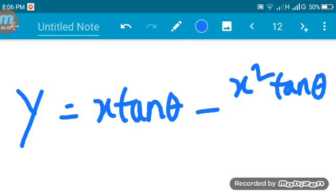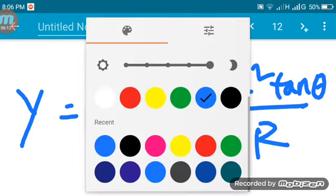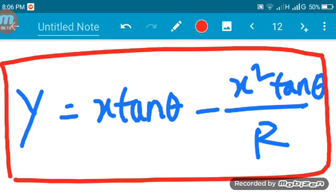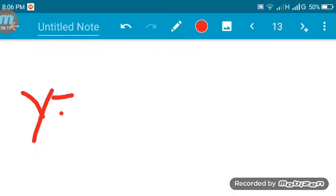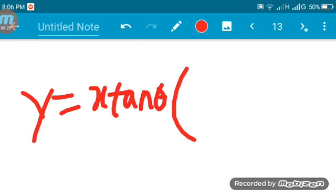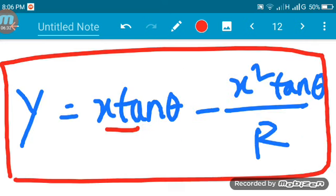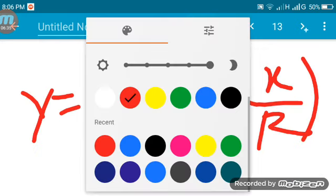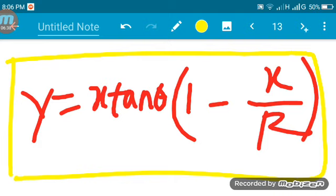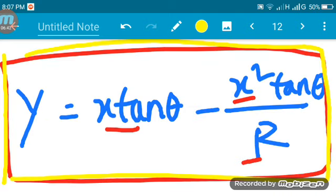So the final simplified form of the projectile motion equation is: Y = X tan theta - (X² tan theta)/R, where R is the range. This equation describes the complete trajectory of projectile motion. Understanding this equation and how to derive it is key to solving projectile motion problems.